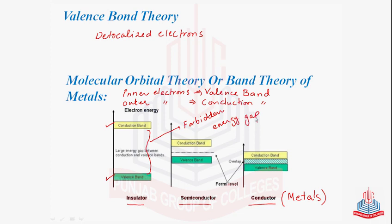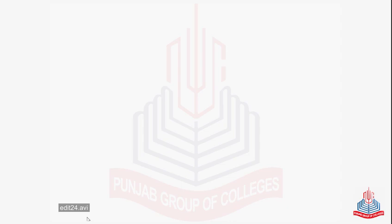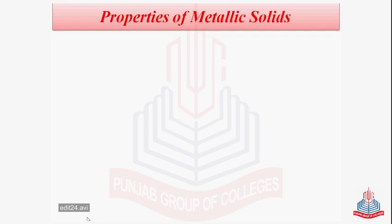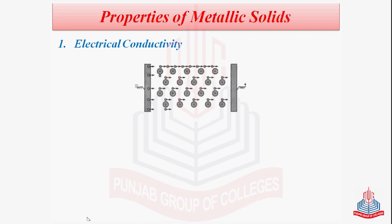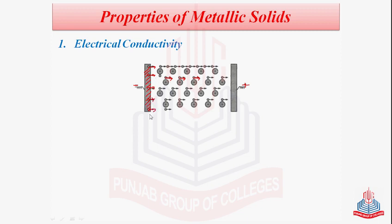Now, after discussing the metallic solids and the theories that explain the metallic bonds, let's discuss some properties of metallic solids. First of all, electrical conductivity — a very important property. We know that metals are very good conductors of electricity. When an electric field is applied between the two ends of the metal, the mobile electrons begin to move towards the positive pole.